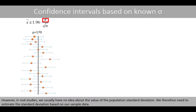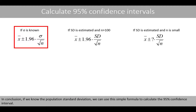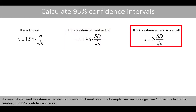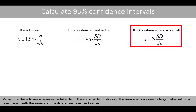However, in real studies, we usually have no idea about the value of the population standard deviation. We therefore need to estimate the standard deviation based on our sample data. In conclusion, if we know the population standard deviation, we can use this simple formula to calculate the 95% confidence interval. If we do not know the population standard deviation but the sample size is large, for example greater than 100, we can estimate the standard deviation based on the sample and basically use the same formula. However, if we need to estimate the standard deviation based on a small sample, we can no longer use 1.96 as a factor for creating our 95% confidence interval. We then have to use a larger value taken from the so-called t-distribution.